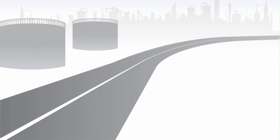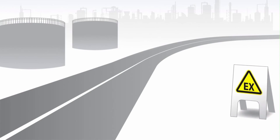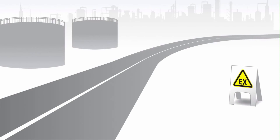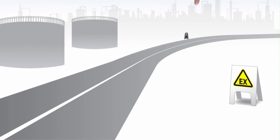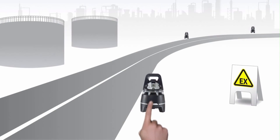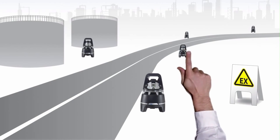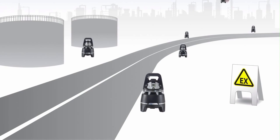A street in the middle of a potentially dangerous area — an explosion protection zone starts here. This makes it a perfect workplace for the X-Zone area monitors. You simply position the area monitors at the critical points: for example, here, here, here, and here.